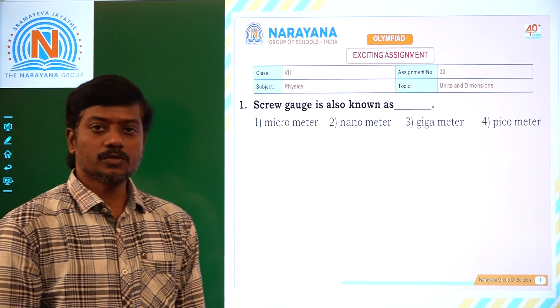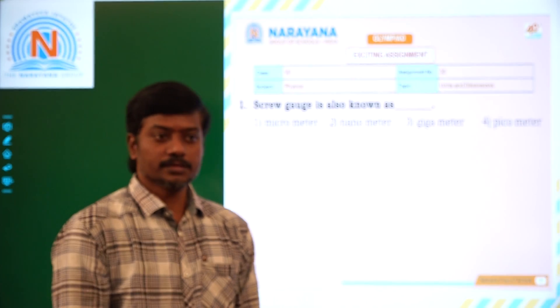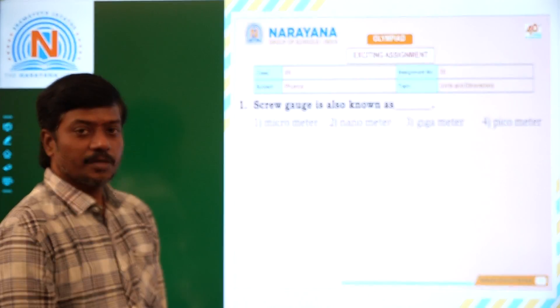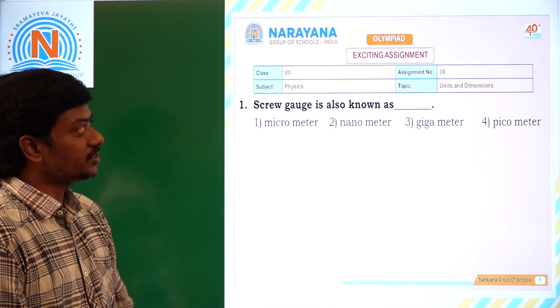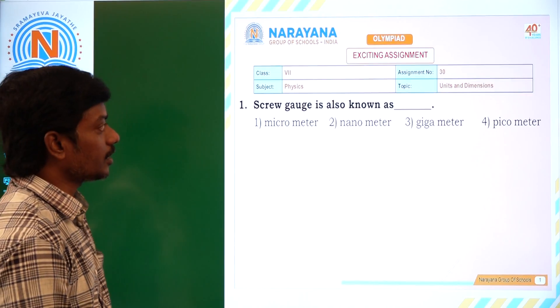Good morning students. Welcome to R&R light class. Today's topic is about 7th class units and dimensions, assignment number 13. So let's see the questions.